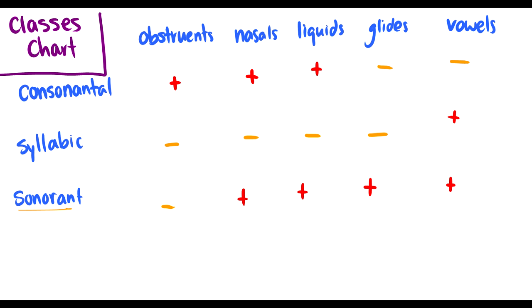So let's take a look at this class chart here a little bit more in depth. First of all, obstruents are just consonantal. They're not syllabic. They're not sonorant. Nasals and liquids, however, they are not syllabic, but they are sonorant. So mmmmmmm can't be nuclei, and ul and ur cannot be nuclei either. However, they're both consonants, and they're both sonorant.